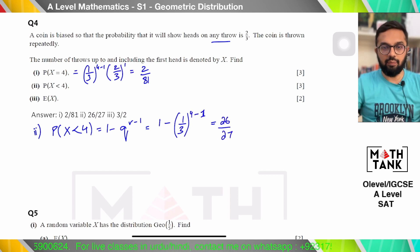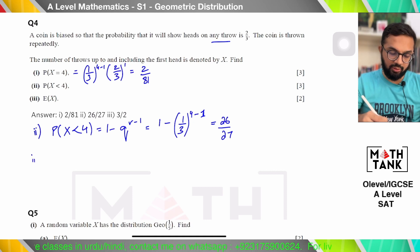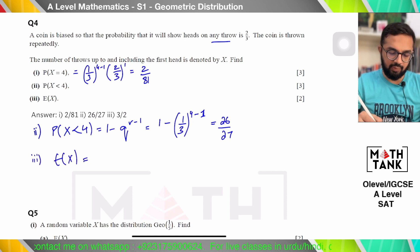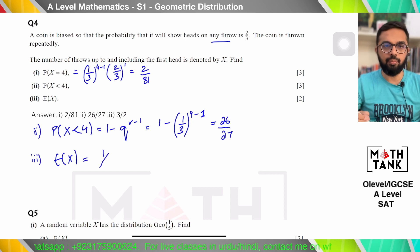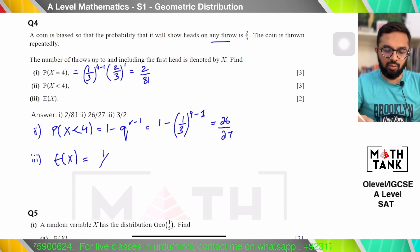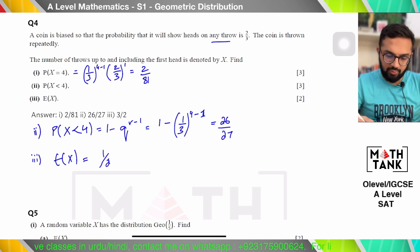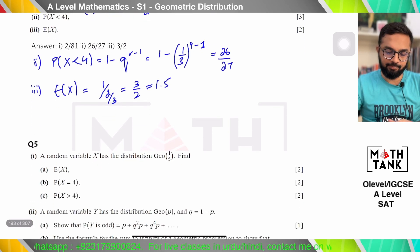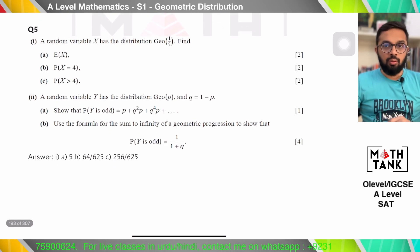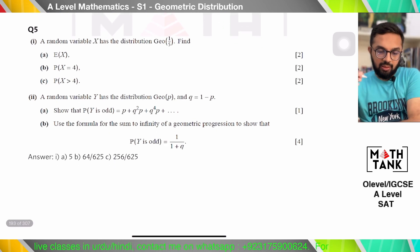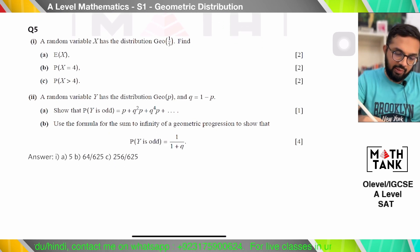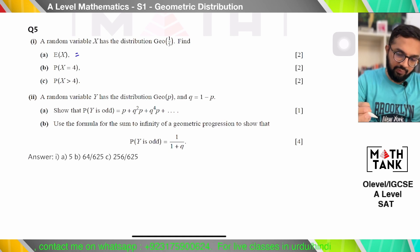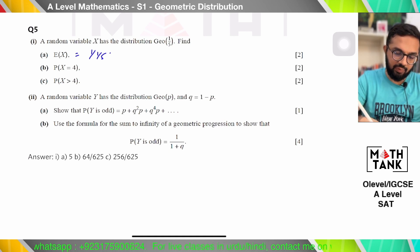The corrected answer is 26/27. The expected value of X is 1/p = 1/(2/3) = 3/2 = 1.5. For question 5, if a random variable X has a geometric distribution with p = 1/5, the expected value of X is 1/(1/5) = 5.